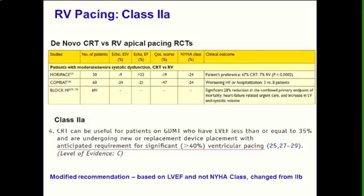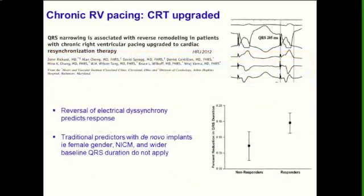We really don't know which patients to select, but we can use CRT — class 2A — as useful for patients on best medical therapy with an anticipated requirement for significant ventricular pacing, defined as more than 40%. This is a modified recommendation; before it was a 2B indication but now it's recognized as potentially useful. What about patients already committed to RV pacing? Only single-center studies exist, showing a very wide QRS during right ventricular pacing in heart failure — worse LV conduction delay than in left bundle branch block — and if you upgrade them, most do very well. The usual factors of QRS duration, female gender, and non-ischemic cardiomyopathy do not apply in this condition.